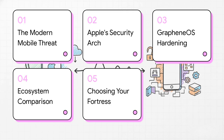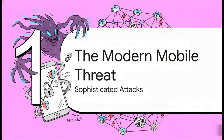Here's our roadmap for this session. We're going to start by defining the modern mobile threat, just to make sure we're all on the same page. Then we'll dissect Apple's integrated security model. After that, we'll take a deep dive into how GrapheneOS hardens the Android core. We'll put them head to head in a direct comparison, and then we'll wrap up with a framework for how you can choose your own digital fortress based on your threat model.